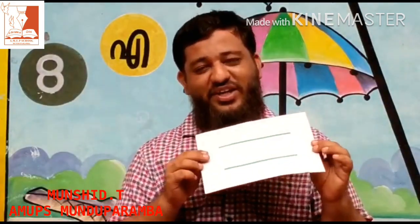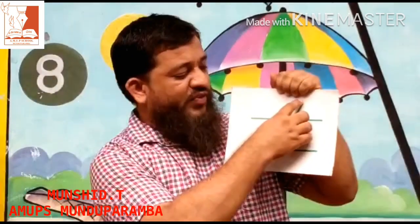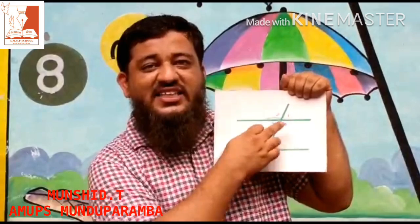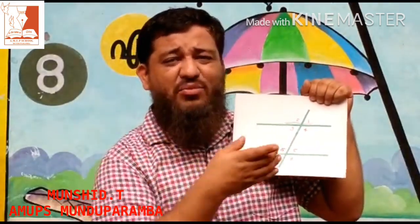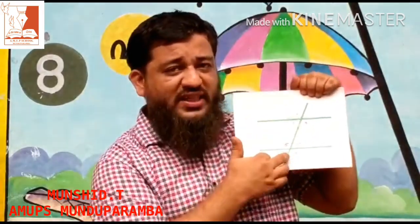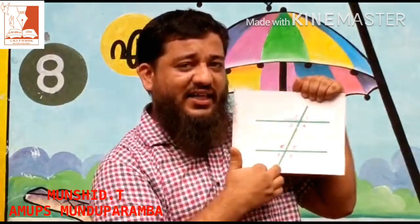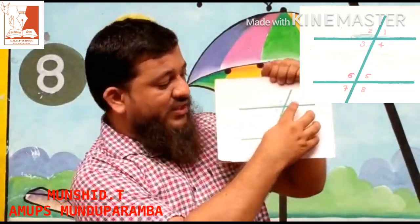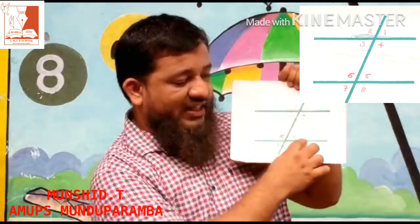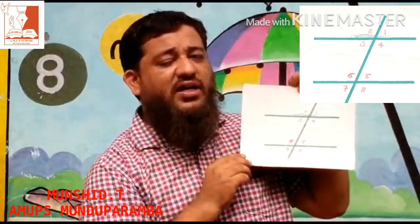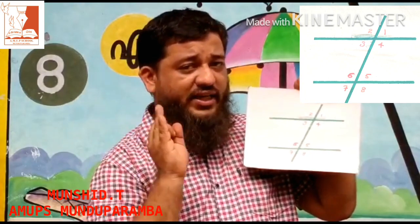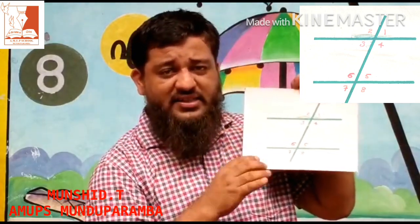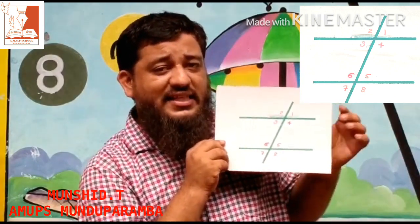Now you understand what parallel lines are. I will show you one more picture. Here we can see two parallel lines and one crossing line. This crossing line is known as a transversal. One line is crossing the two parallel lines. You can see this — here four angles are formed at each intersection. You have studied some angles in sixth standard: opposite angles, linear pair, and adjacent angles.